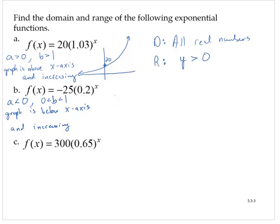So if I wanted to again draw a rough sketch below the x-axis, here's negative 25 and it's increasing. So I get a graph that does something like this.